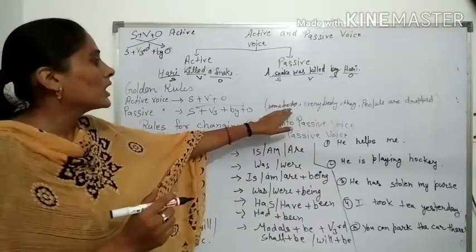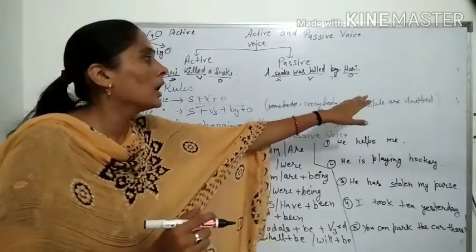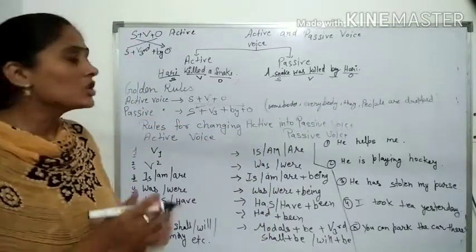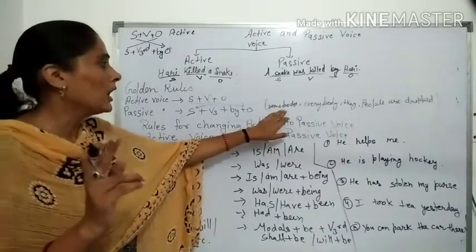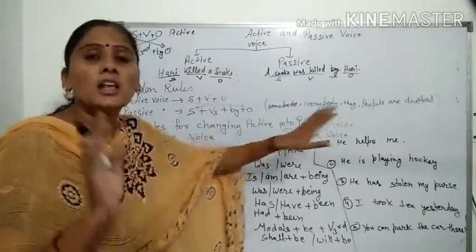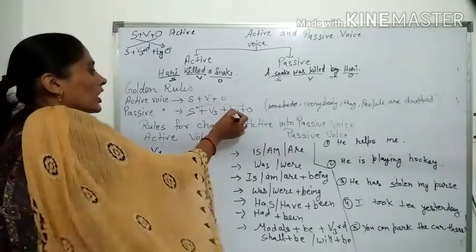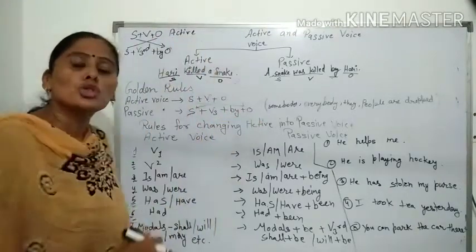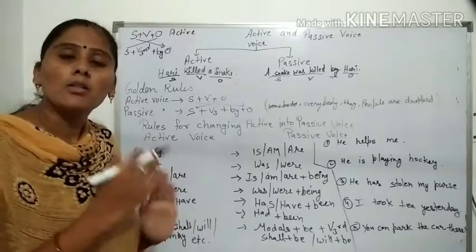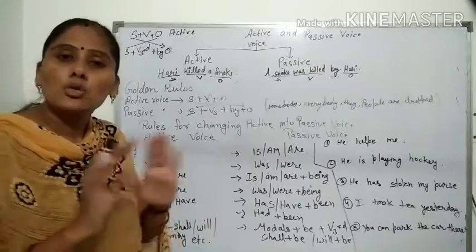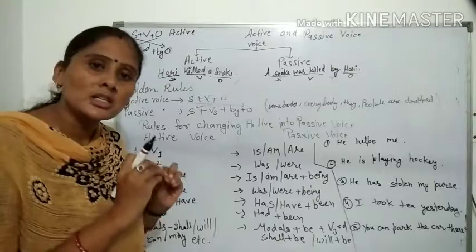यहाँ पर कुछ words आपको बताएंगे — जैसे somebody, everybody, they, people — ये are dropped। यानि जहाँ पर sentence में subject में somebody, everybody, they, या people दिया हो, तो जब हम passive voice में change करेंगे, तो by के बाद उन्हें use करने की जरूरत नहीं है। उनको हम drop कर देते हैं, फिर भी हमारा sentence complete sense देगा।